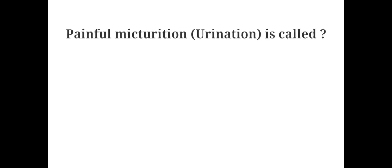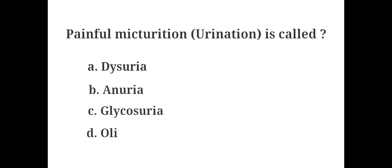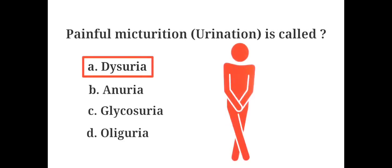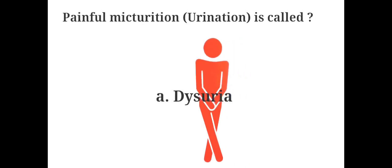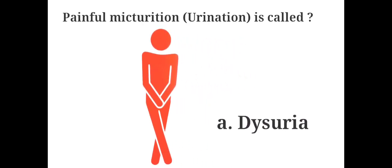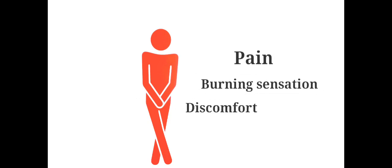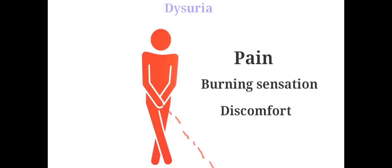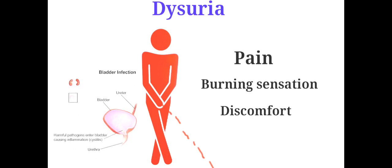Painful micturition is called: A. Dysuria, B. Enuria, C. Glycosuria, D. Oliguria. The answer is A. Dysuria. Painful urination is called dysuria. Dysuria is most commonly caused by bacterial infections of the urinary tract and is a common symptom of bladder infection (cystitis).